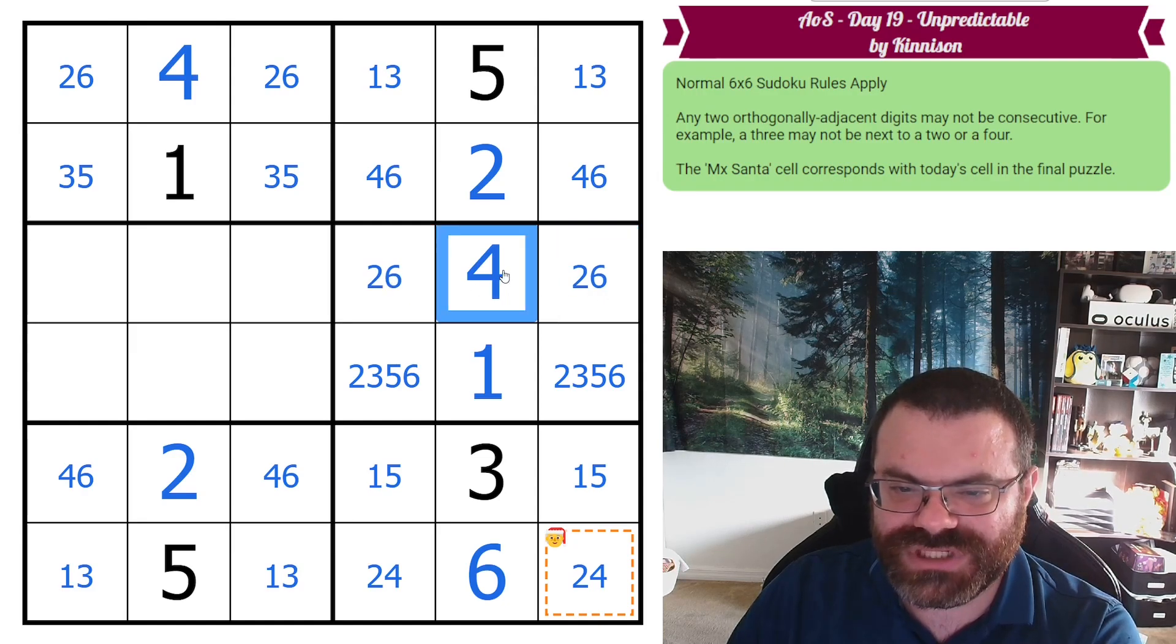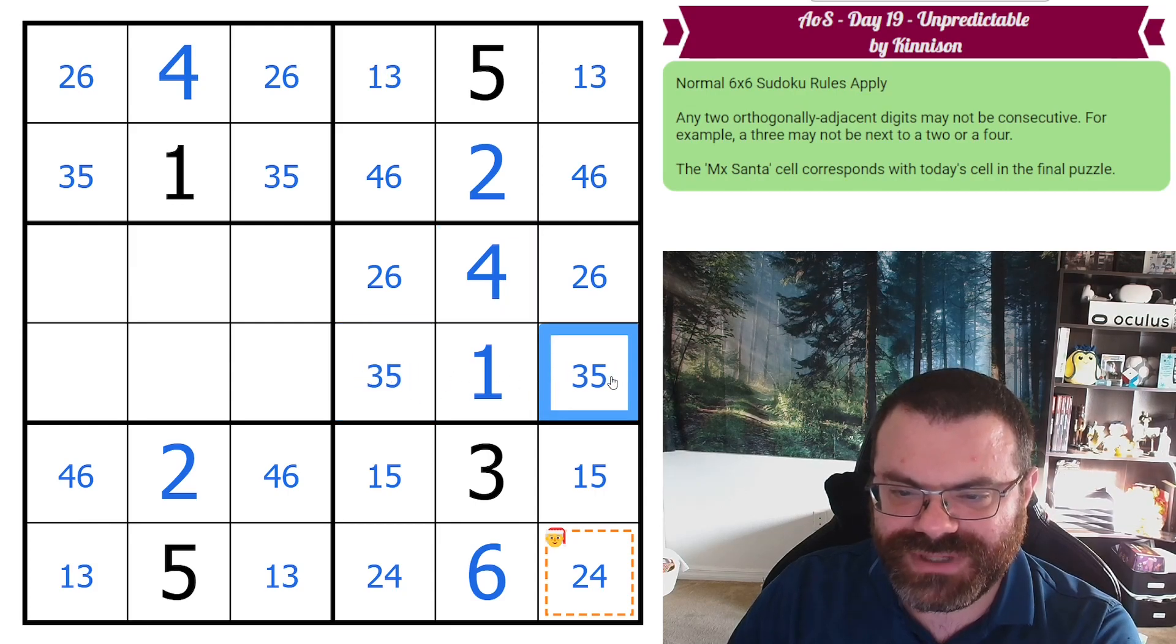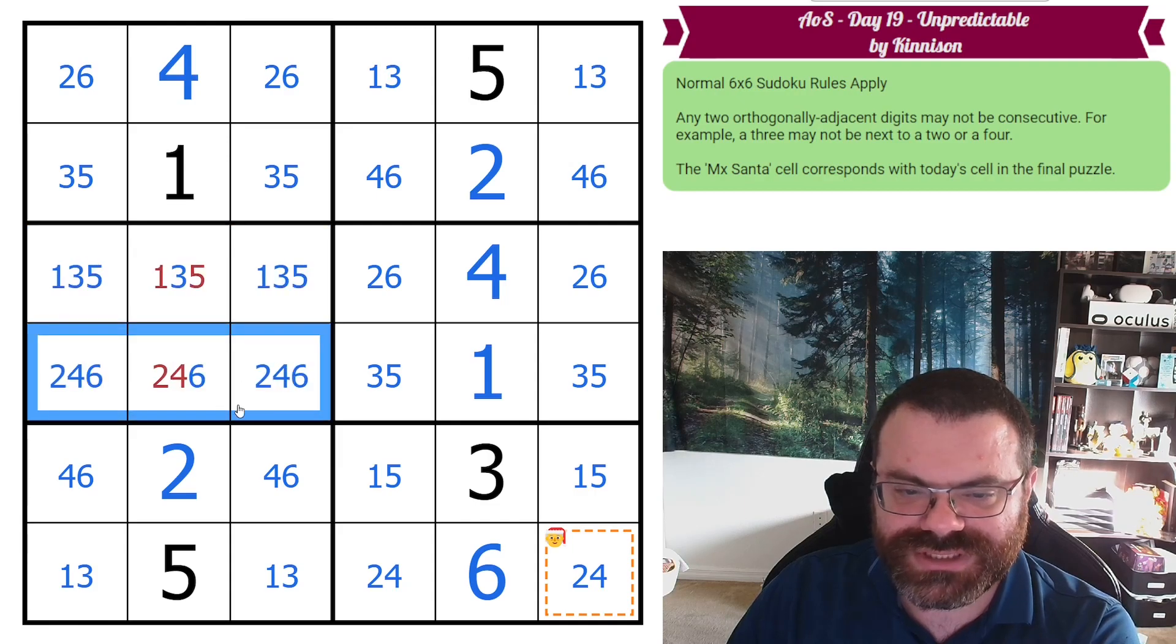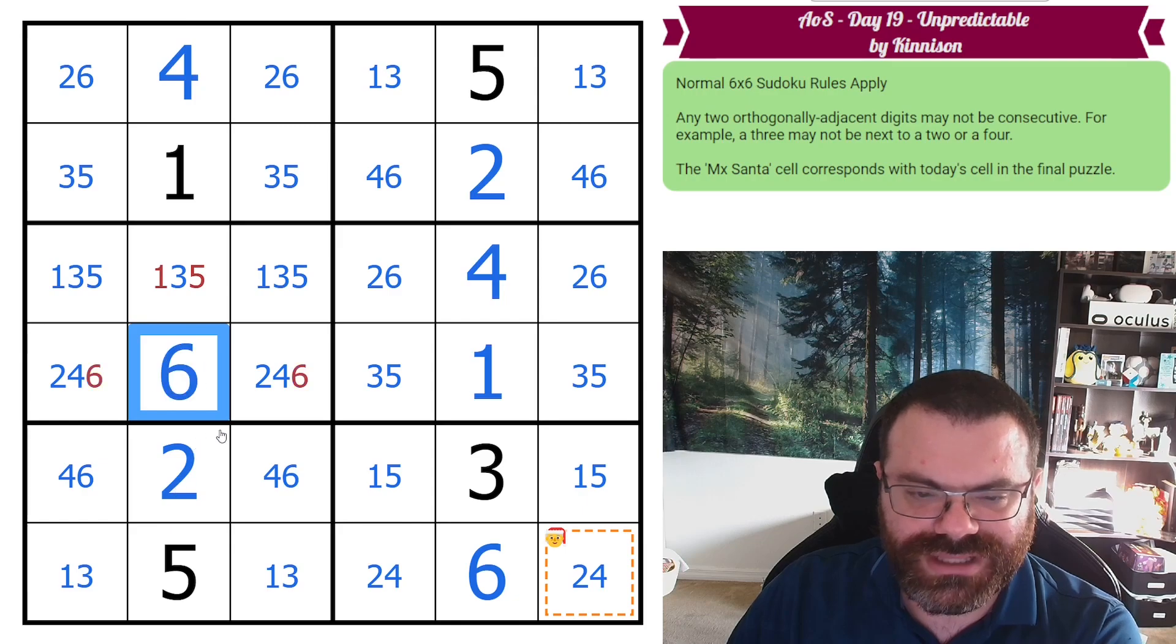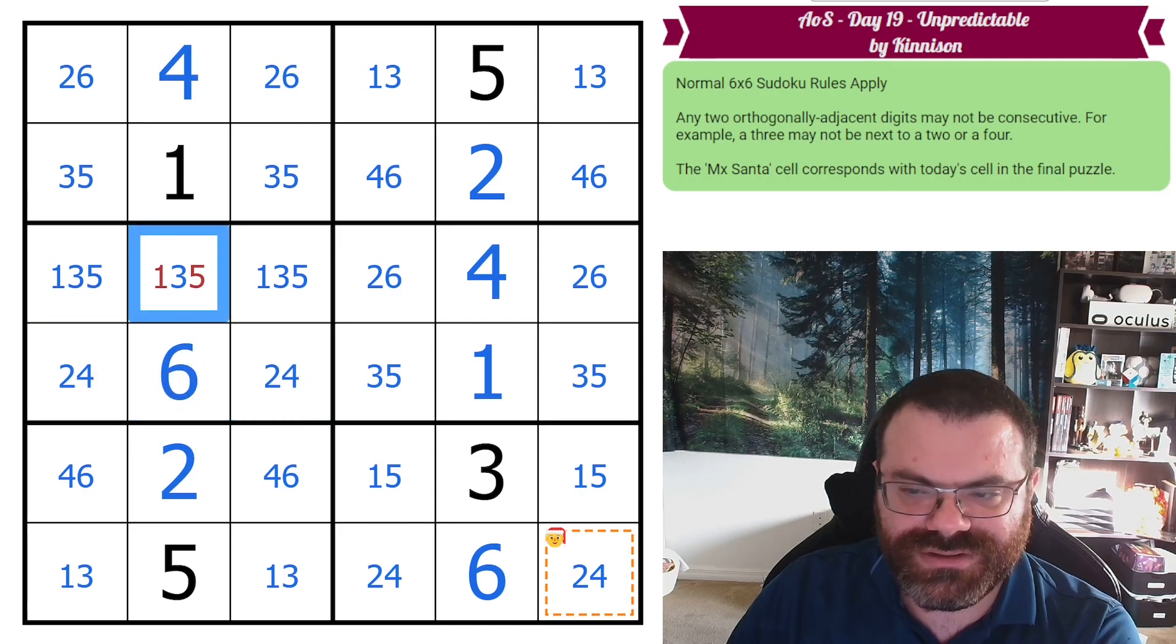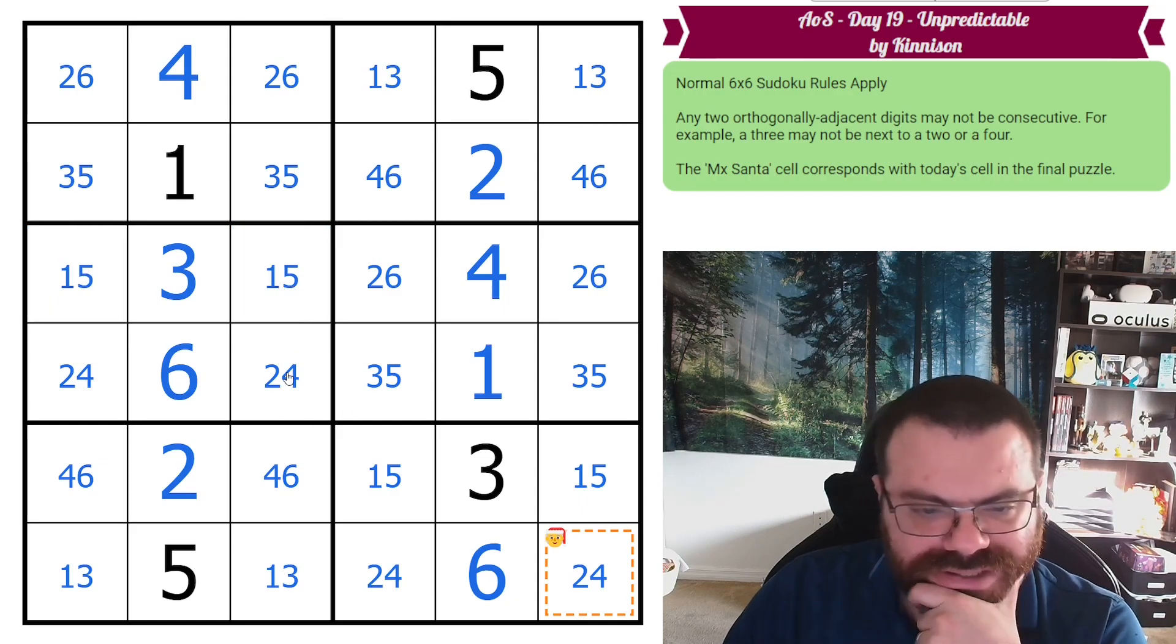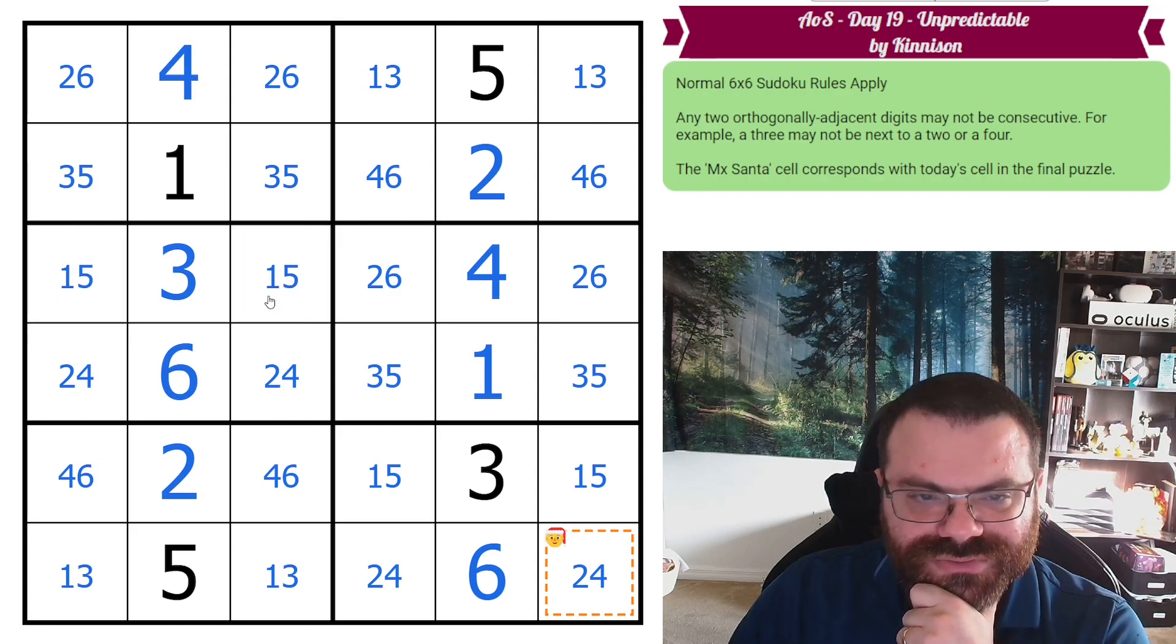I guess the 5 could be removed just by that placed 4 anyway. So that's a 2-6 pair. So this is a 3-5 pair. And so now we can put 1-3-5 here and 2-4-6 here. This can only be 6 just based on the column. So 6s are eliminated here. This is eliminated from here. Now let's take a quick look to see how to finish this.